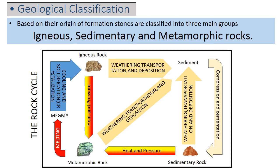This rock may be thrust back to the surface by crustal movements or forced deeper into the earth's interior, where heat and pressure transform it into metamorphic rock. The metamorphic rock in turn may be pushed up to the surface or may be melted to form magma. Eventually the magma cools and solidifies below or on the surface, forming igneous rock. When the sedimentary, igneous, and metamorphic rocks are exposed once more on the earth's surface, the cycle begins again.